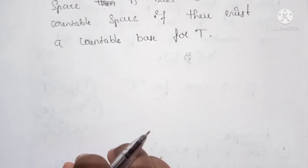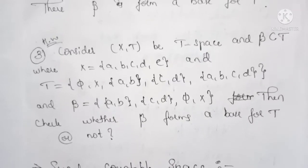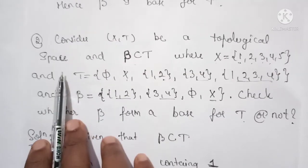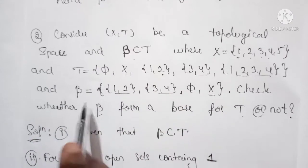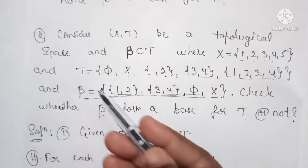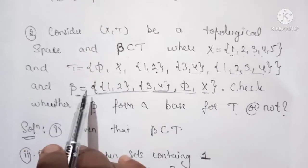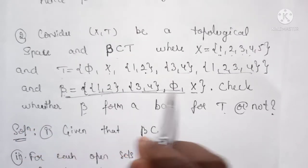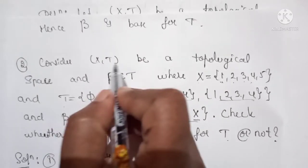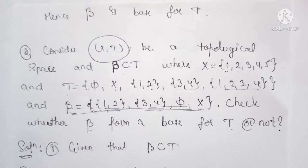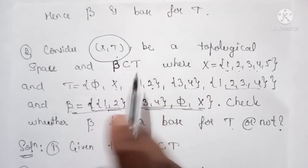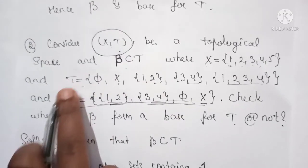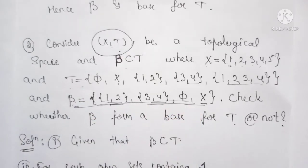Now we have an example. We take X = {a, b}. As shown in the last video, this base B forms a base for T. You can observe that this base is countable — there exists a countable base for T. Therefore this topological space is a second countable space, because there exists a base for T and it is a countable base.